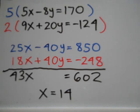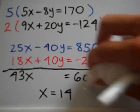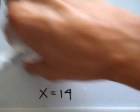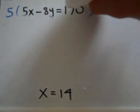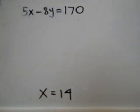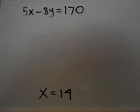So to solve for y, I have to utilize one of the original equations with x as 14. Okay, so I'll use the first equation. 5x minus 8y is equal to 170.